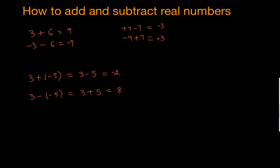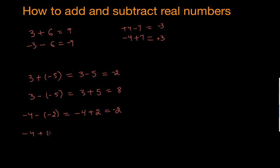One more: negative 4 minus negative 2. This can be written as negative 4, and a negative times a negative gives positive, so it becomes negative 4 plus 2. Both signs are now opposite, so we subtract: 4 minus 2 gives 2. The bigger number is 4 and the sign in front of it is negative, so the answer is negative 2.